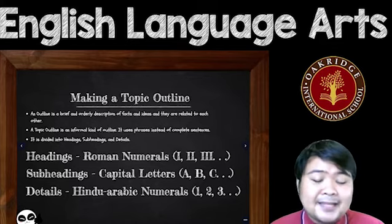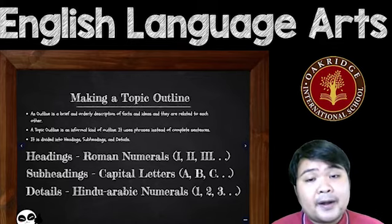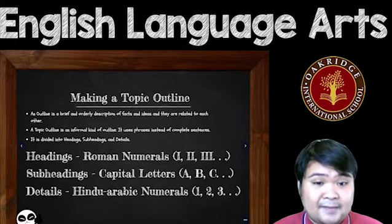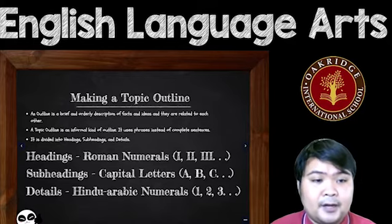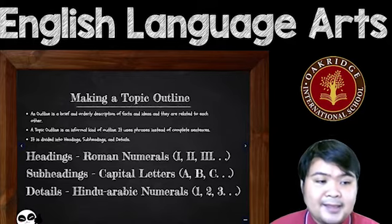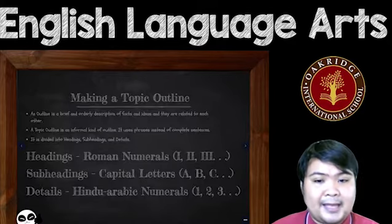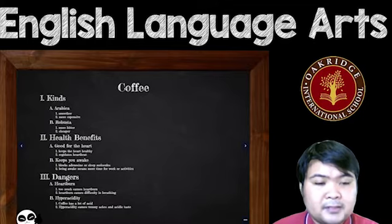And then the details will use Hindu-Arabic numerals: one, two, three, four, five, six, seven, eight, nine, ten. This is how you make a topic outline.